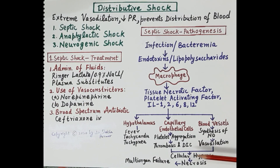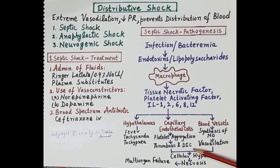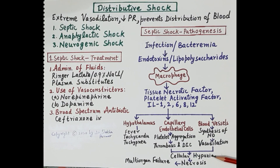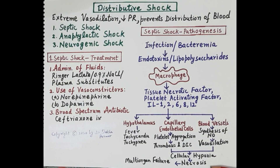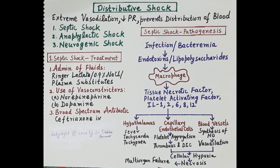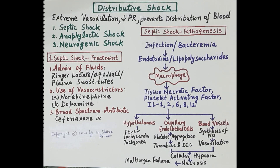The most important factors — thrombosis, disseminated intravascular coagulation, and vasodilation — are responsible for ischemia and cellular hypoxia. Reduced oxygen supply to tissues leads to tissue death, termed necrosis, followed by organ failure, multi-organ failure, and if not treated in time, death of the individual.